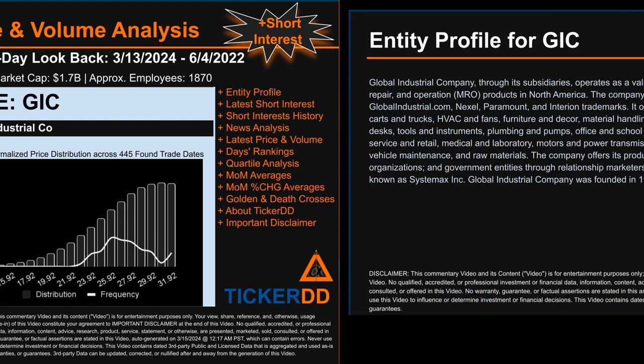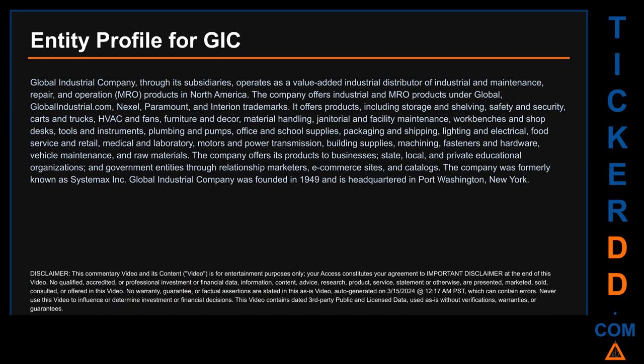Hello, my name is Carl. I searched the public web to find information about the company that is behind this ticker. Here is what I found. Global Industrial Company, through its subsidiaries, operates as a value-added industrial distributor of industrial and maintenance, repair, and operation (MRO) products in North America. The company offers industrial and MRO products under Global, GlobalIndustrial.com, Nexel, Paramount, and Interior trademarks. It offers products including storage and shelving, safety and security, carts and trucks, HVAC and fans, furniture and decor, material handling, janitorial and facility maintenance, work benches and shop desks, tools and instruments, plumbing and pumps, office and school supplies, packaging and shipping, lighting and electrical, food service and retail.